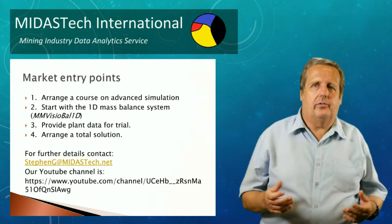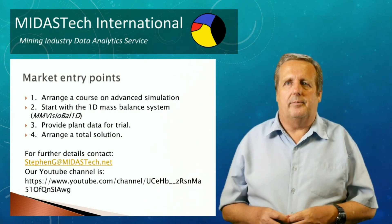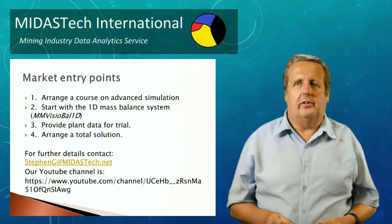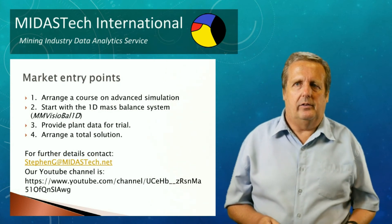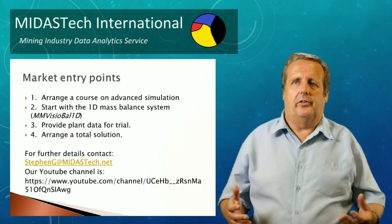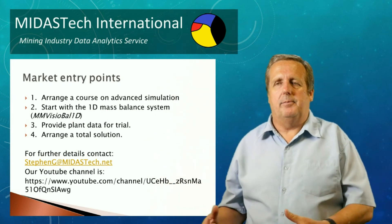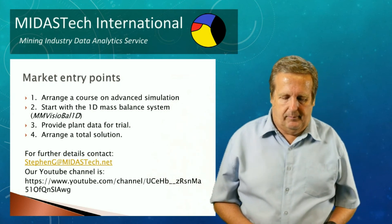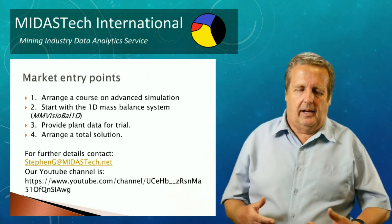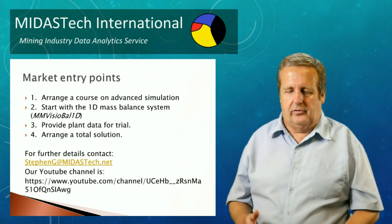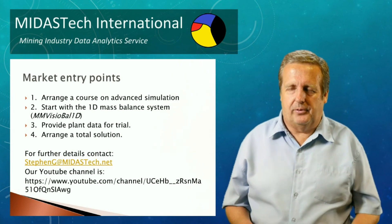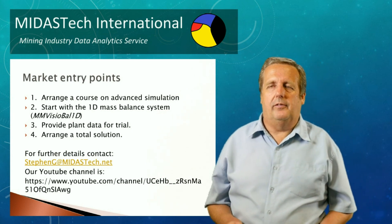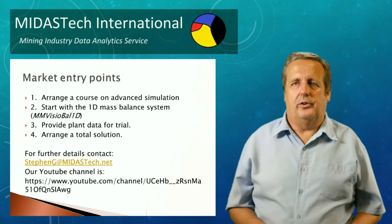How do we move forward? There are a number of options. You could arrange a course on advanced simulation, or start with the simplest product — a 1D mass balance system. Alternatively, you can send us plant data for a trial, or, if you're confident, arrange a total solution: install all available software and implement it as soon as possible with a view to increasing your plant's profit. With one company, we calculated that the number of days needed to use our software to compensate for the cost would be just three days. For more information, please contact us by email, and there is also a YouTube channel.